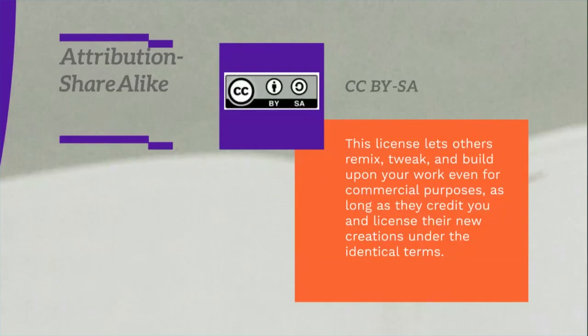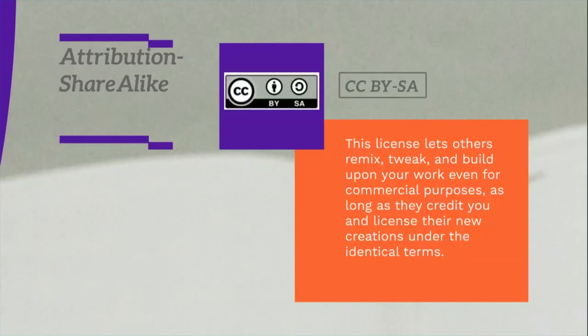The second type of creative commons open license is CC BY-SA, which stands for Creative Commons and Share Alike. This license lets others remix, tweak and build upon your work even for commercial purposes, as long as they credit you and license their new creation under the identical terms.